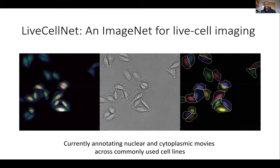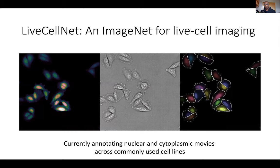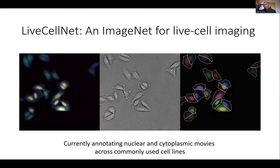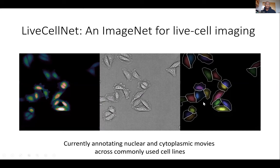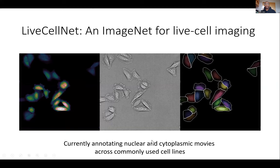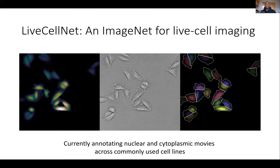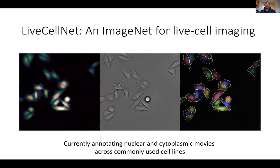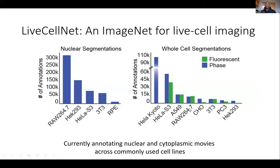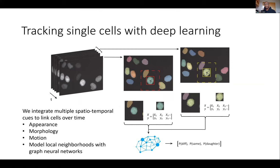Not surprisingly, Mesmer produces results that make sense — for nuclear markers, most of the signal is in the nucleus, and for non-nuclear markers, most of the signal is not in the nucleus. What's really nice is that Mesmer is able to do this in an automated fashion with single-cell resolution, whereas before this kind of scoring would have to be done manually by graduate students, postdocs, or pathologists. Our lab has also been hard at work over the last couple of years creating a similar resource for live cell imaging. Here we're trying to annotate both nuclear and cytoplasmic fluorescence, as well as label-free methods like phase microscopy, labeling entire movies of commonly used cell lines. This work is still ongoing, but the size of our labeled data is quickly approaching the size of TissueNet — a couple months ago we definitely passed the half-million segmentation mark. With these labeled movies, not only can we generate models for cell segmentation, but we can also generate models for cell tracking.